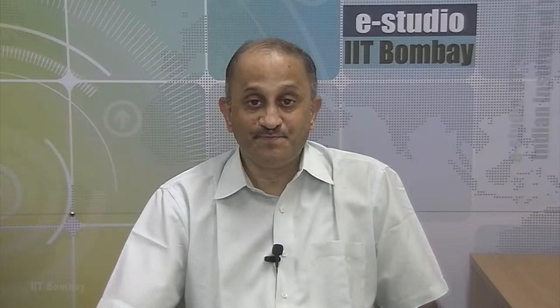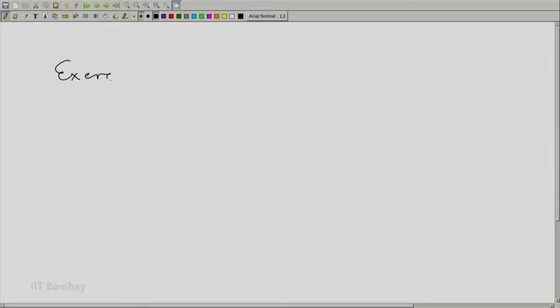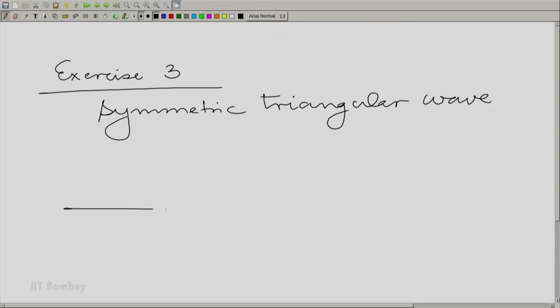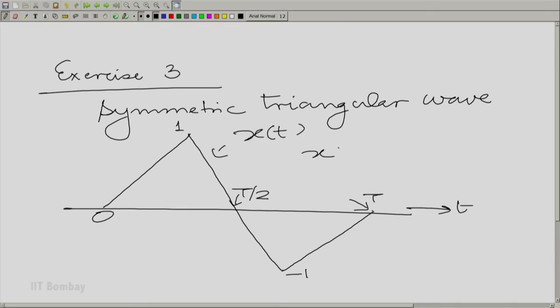Exercise 3 will now be a slightly more complex waveform. Let me draw the waveform. We will have a symmetric triangular wave. I am showing you the wave over one period. So, it rises to 1, falls to 0, then it goes down to minus 1 and comes back to 0. This is shown over 1 period. Of course, x(t) is equal to x(t+T) for all t. Now, let me work this example for you in a few steps. I am not going to work out the full expression. That is left to you to do.